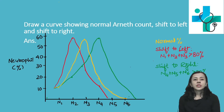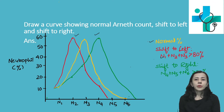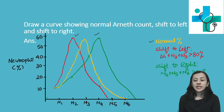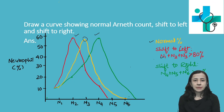Draw a curve showing normal Arneth count, shift to right, and shift to left. Normal count — as we have discussed, the normal percentage of various cells. If you plot them on a graph, you get this normal curve. As we know, N1, N2, N3, N4, N5 stages have various numbers, with the highest being the N3 stage cell. So this is the normal percentage.